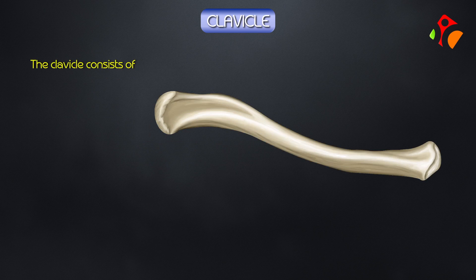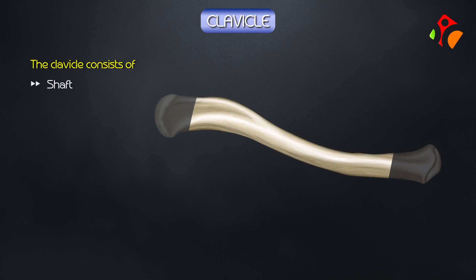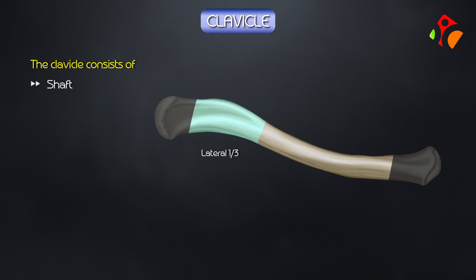The clavicle consists of the shaft, acromial end, and the sternal end. The shaft is divided into the lateral one-third and medial two-thirds.